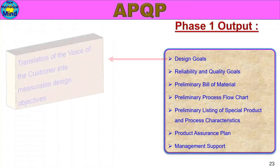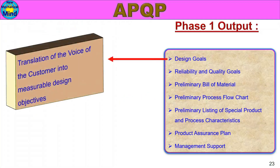First, Design Goals: translation of the voice of the customer into measurable design objectives. The customer's requirements, expectations and information are converted into design objectives. For example, dimensions or specific parameters are converted into design goals.